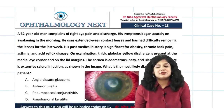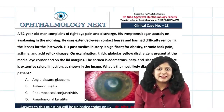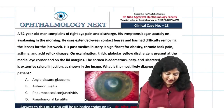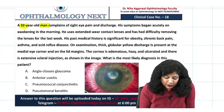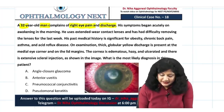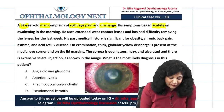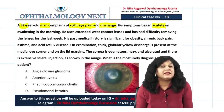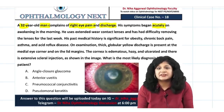Hello guys, welcome to the clinical scenarios and this is your case number 18. Here we have a 32-year-old male who complains of right eye pain and discharge. His symptoms begin acutely on awakening in the morning, so they are telling us this is an acute condition.